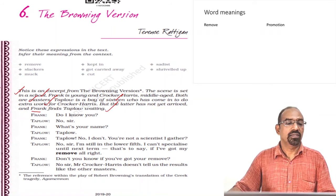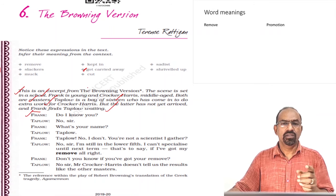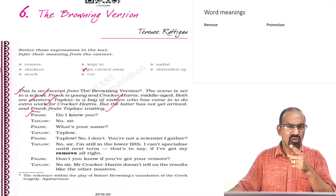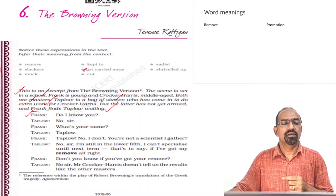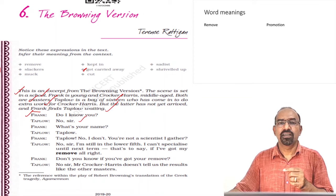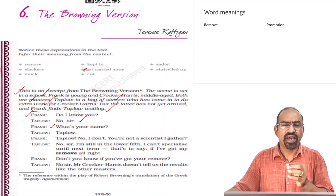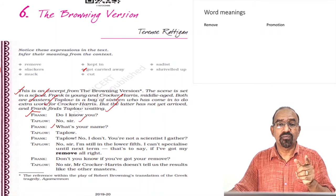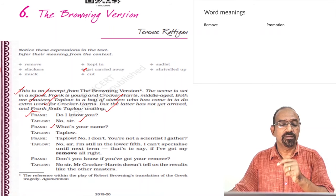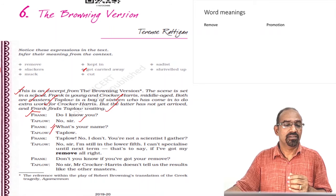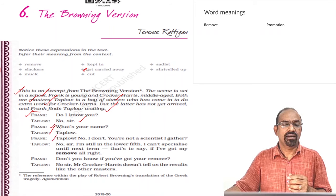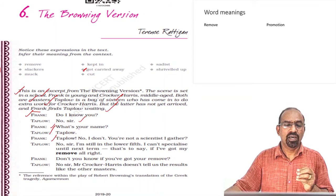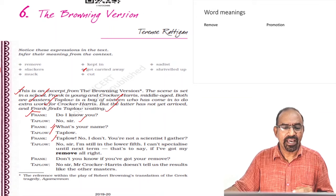Frank notices Taplow and asks, 'Do I know you?' The boy says, 'No sir.' Frank asks his name; he replies 'Taplow.' Frank says he doesn't know him and asks if he is a science student. Taplow says, 'No sir, I am still in the lower fifth. I can't specialize until next term — that is, if I have got my remove.' Remove here means promotion. So he is waiting for his promotion from the lower fifth to the next stream.